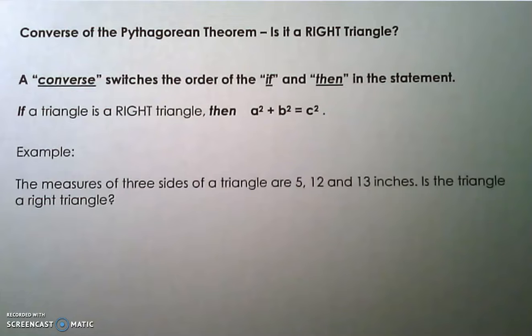The converse of a statement switches the if and then in a statement. Pythagorean theorem states that if a squared plus b squared equals c squared, then the triangle is a right triangle. So the converse of that would be if a triangle is a right triangle, then a squared plus b squared would equal c squared.